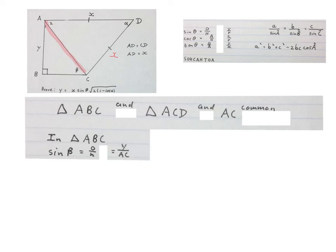We start in triangle ABC and we wrote sine of beta equals opposite over hypotenuse. Starting from here the opposite is Y and the hypotenuse is AC. Then to get the Y alone we times by AC on both sides. Then AC sine beta equals Y. Now Y is alone.